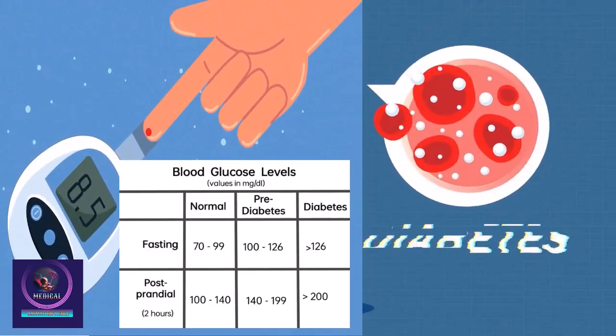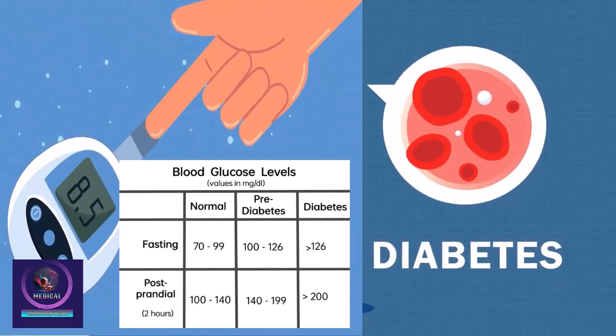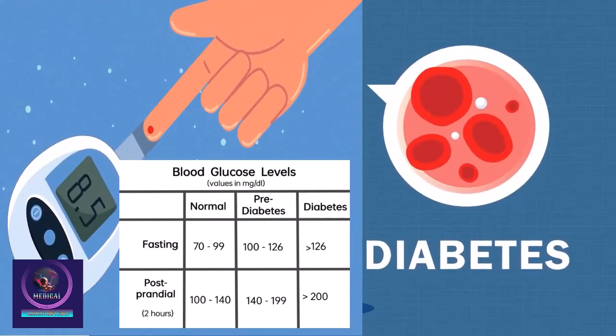Diabetes can cause problems around your body if it's untreated. If high levels of glucose stay in the blood, it can start to damage the blood vessels.